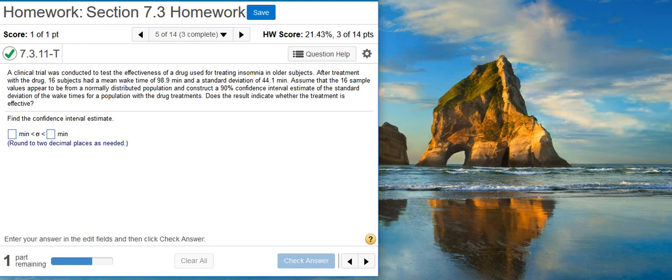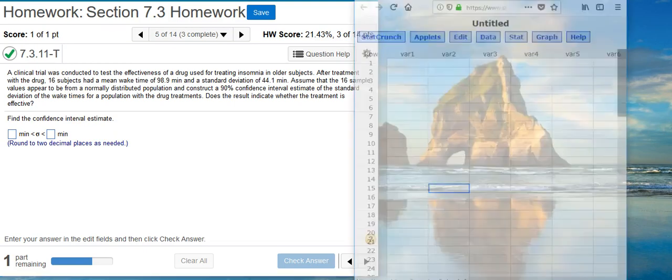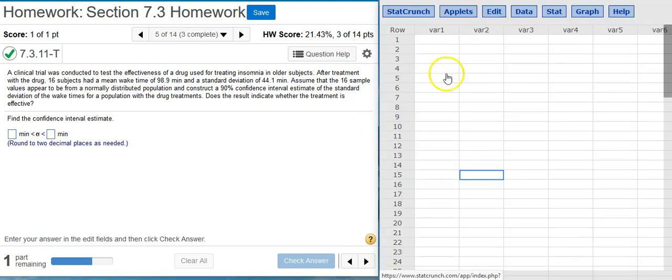This first part asks us to find the confidence interval estimate as described in the problem statement. To do that, I'm going to bring up StatCrunch. And using StatCrunch, we can actually get this, but we have to put in a small caveat.